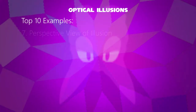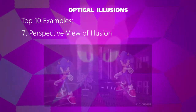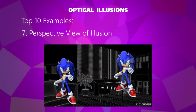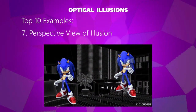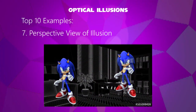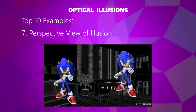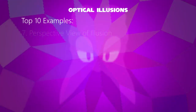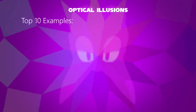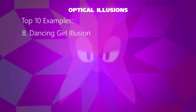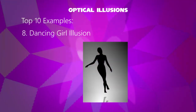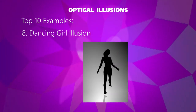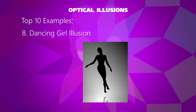Seventh example: the perspective illusion. Both characters are Sonic — they look identical, but one could appear large and the other small. Eighth example: the dancing girl illusion. She appears to spin in either a clockwise or counterclockwise direction.